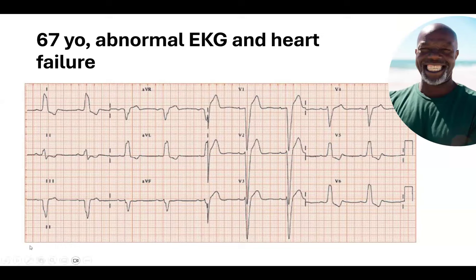CRT with RV pacing has shown no benefit in patients with EF greater than 50% who are not going to have substantial ventricular pacing. Patients with EF greater than 50% who do have substantial pacing, a CRT is class 2B — most people will not implant one. It is definitely contraindicated for those who do not have a high degree of pacing.